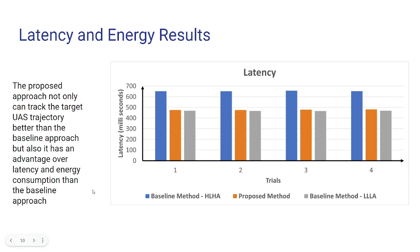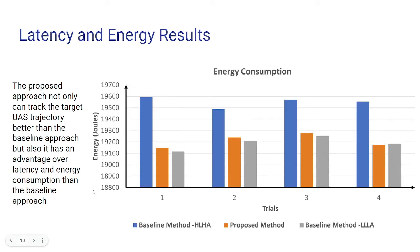Similarly, the energy consumption plot shows that the high-latency, high-accuracy network uses a lot of energy. This energy consumption is calculated based on the computations happening in the system. The low-latency network has less energy consumption compared to all approaches, and the proposed approach's energy consumption is almost equal to the low-latency, low-accuracy network, yet yielding better results than both the low-accuracy, low-latency and the high-accuracy, high-latency networks.